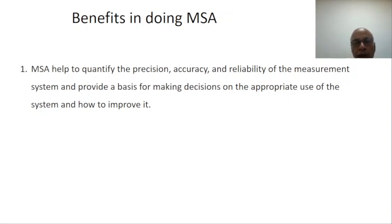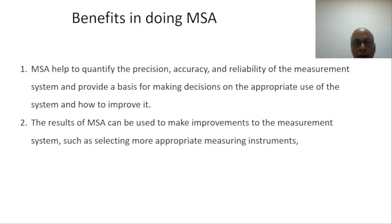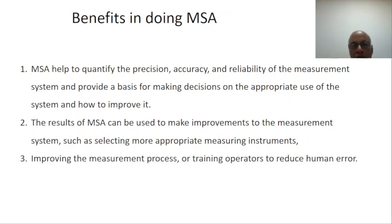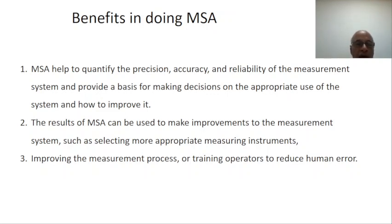Using MSA we can make improvements to the measurement system. It helps us to select or identify more appropriate measuring instruments so there are fewer chances of error during measurement. A third benefit is improving the measurement process or training the operator so that we can eliminate or reduce human error made by the inspector doing the measurement.